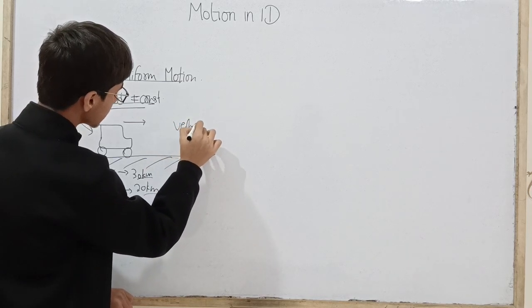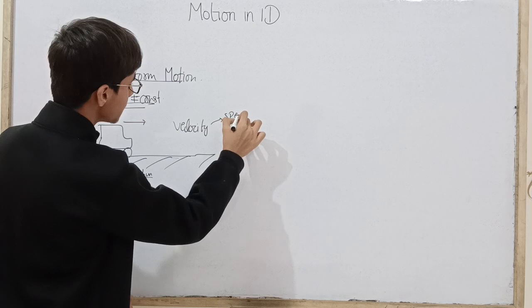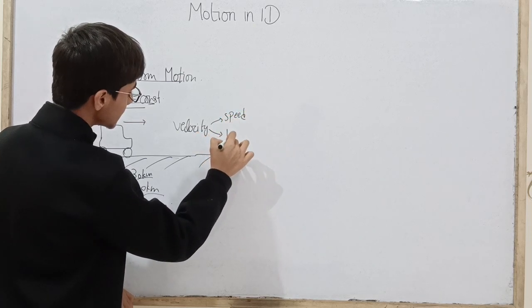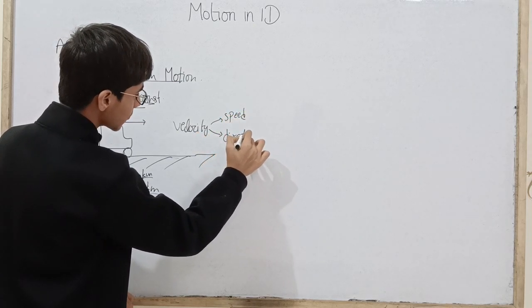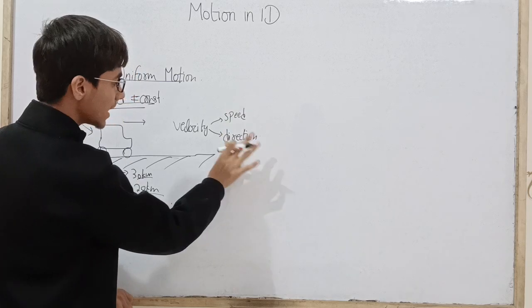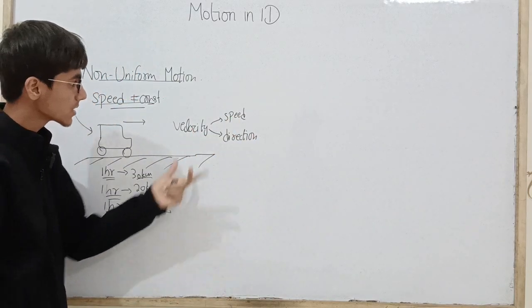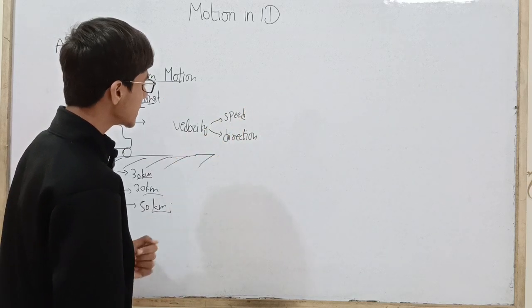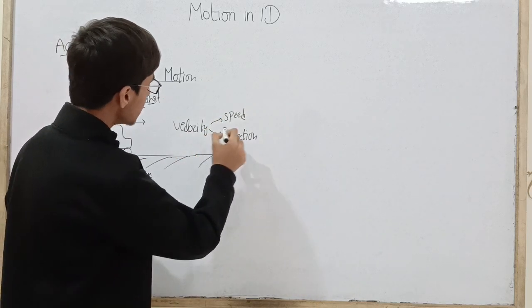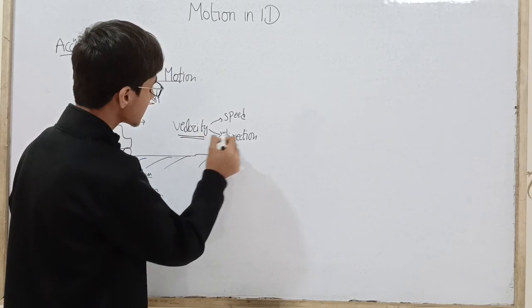So non-uniform is not only the case. In fact, hamara focus most of the time velocity pe hota hai. Velocity mein aap speed bhi dekhoge, velocity mein speed bhi dekhoge, direction bhi dekhoge. Velocity mein magnitude direction dono hain. Magnitude khud speed hai. Magnitude of velocity is speed and obviously velocity kisi direction mein.